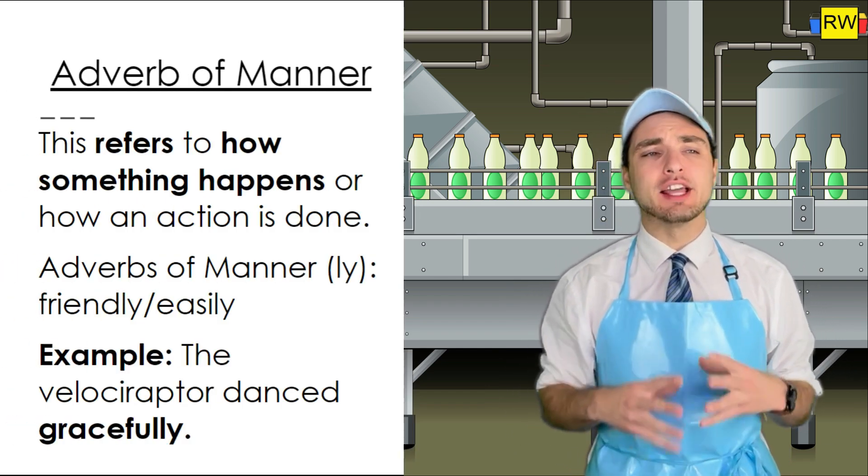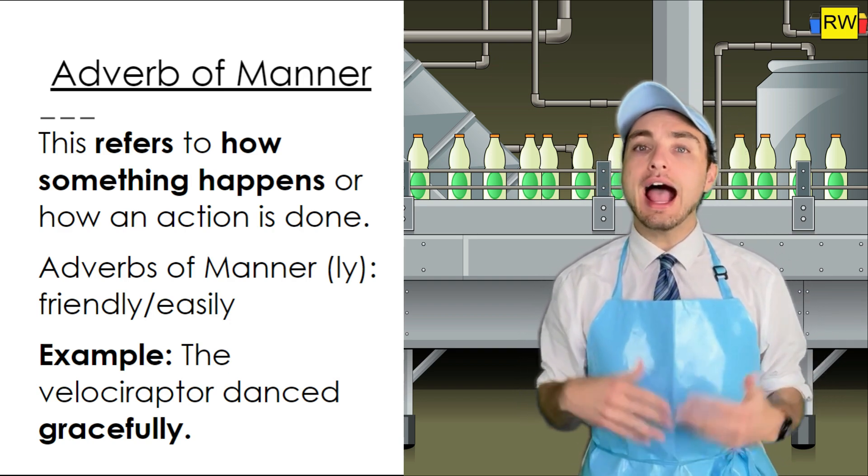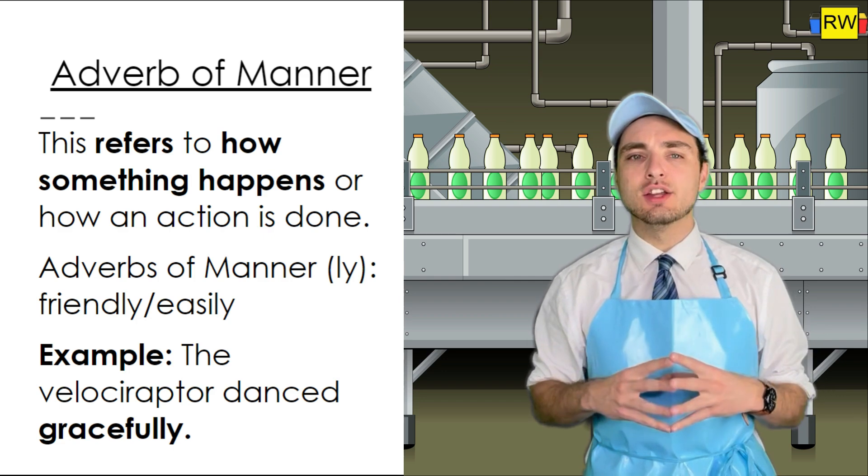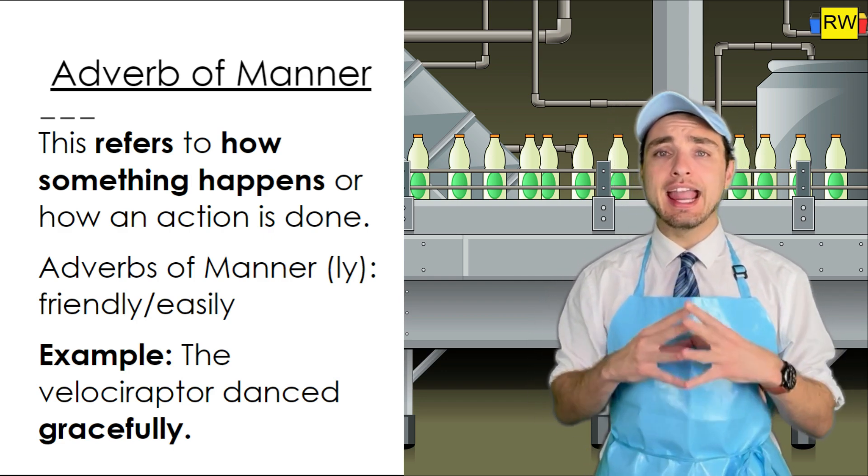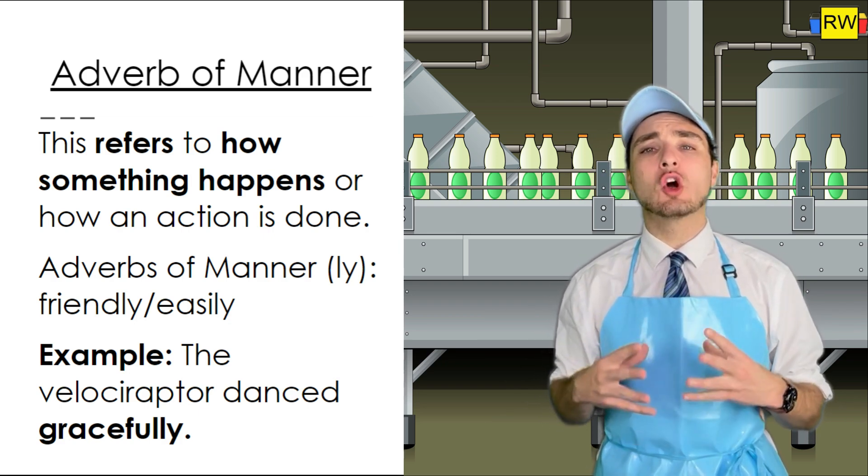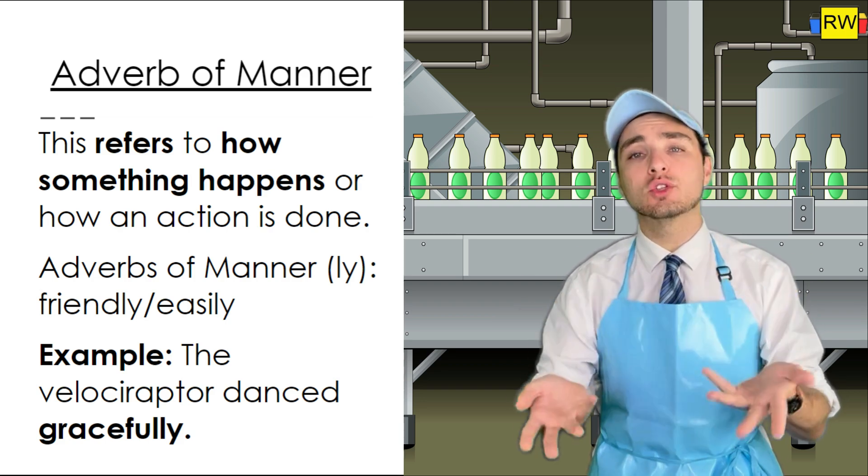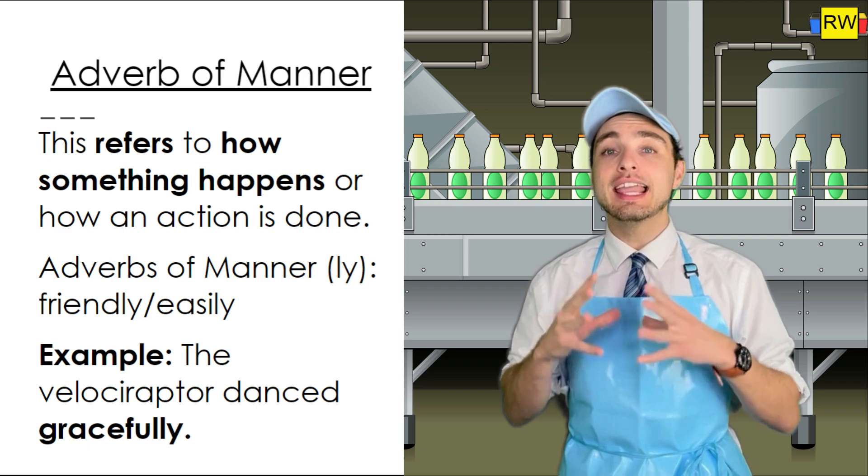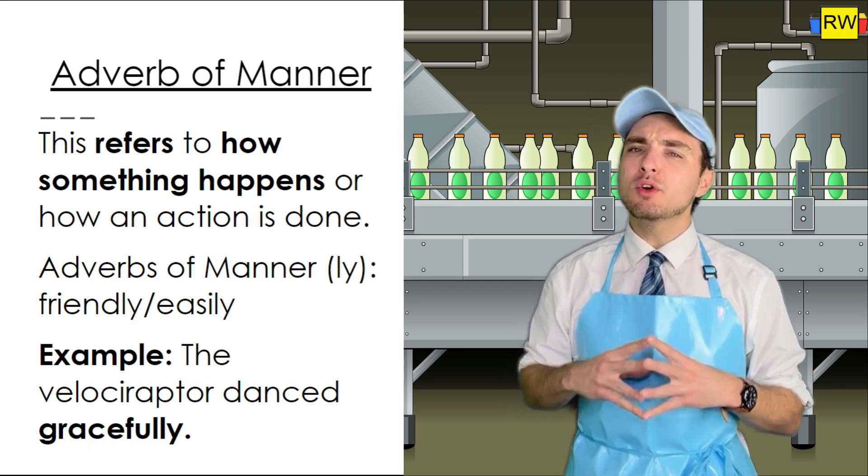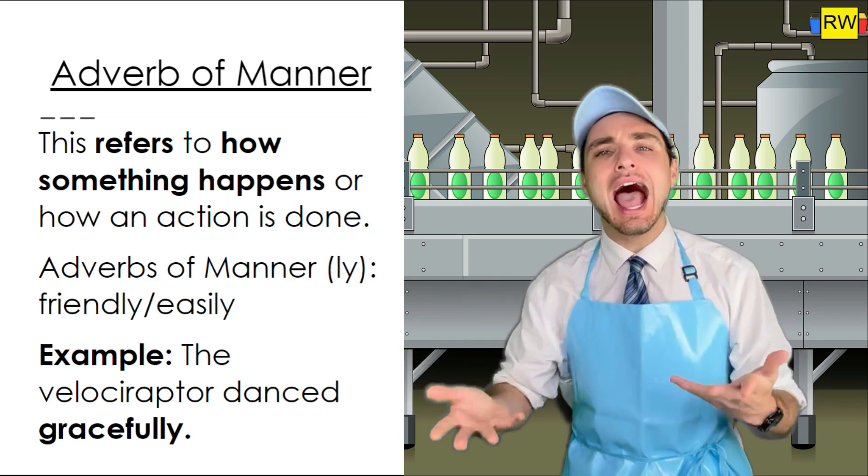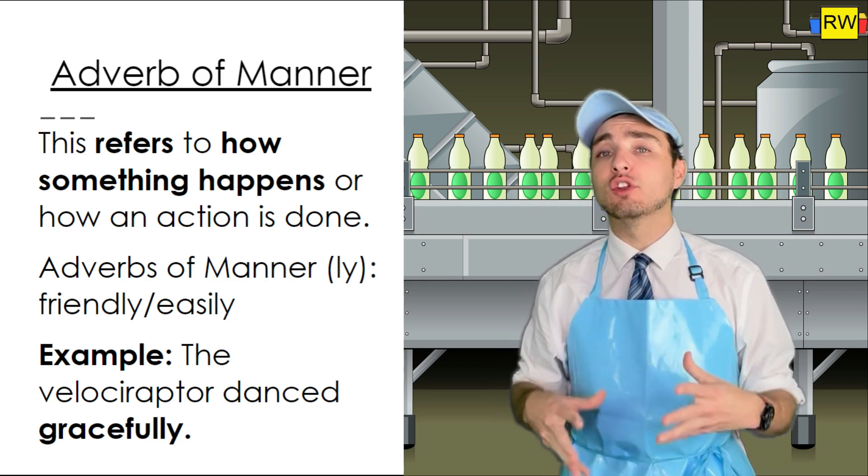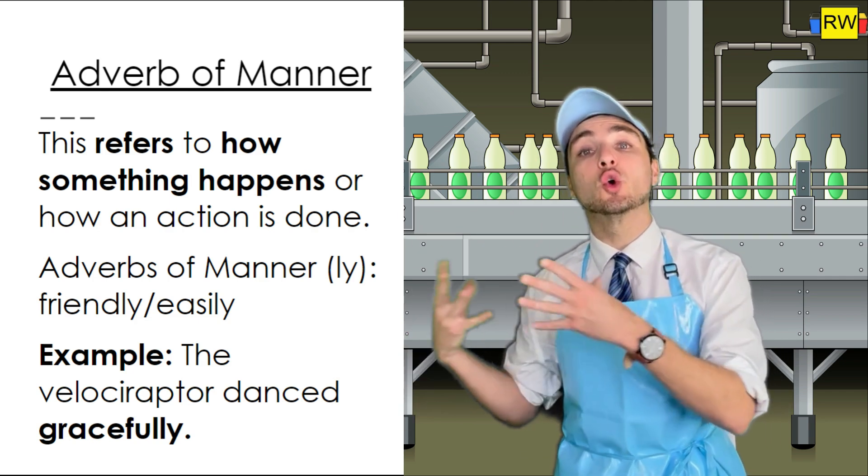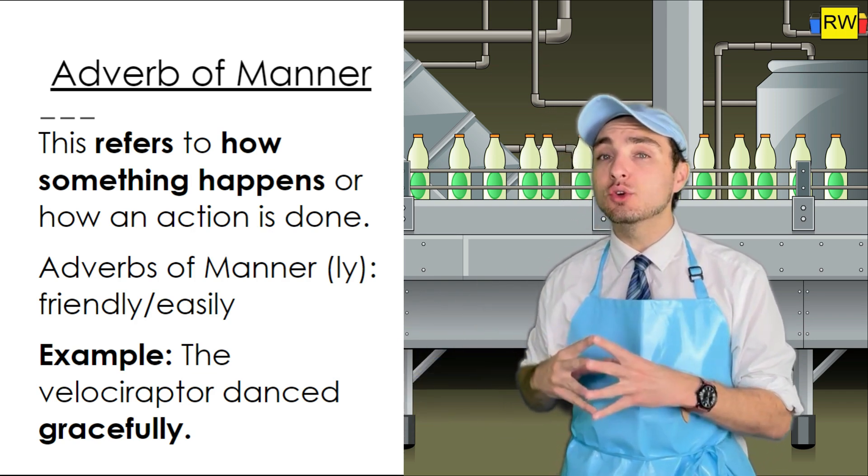First, we have adverb of manner. This refers to how something happens or how something is done. For example, you usually see this with an ly at the end. We can have the words like friendly and easily. Both of these words help describe how something is done or how something happens. Example: the velociraptor danced gracefully. Here, we have the verb danced. But we also have a word that describes how the velociraptor danced. We found out that the velociraptor danced gracefully. Gracefully is adding description to dance. Therefore, gracefully is the adverb. And you'll see that it ends in an ly.